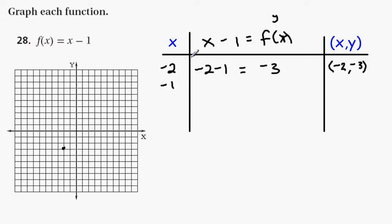Negative 1. Substitute negative 1 in for x. I have negative 1 minus 1. Combine those two, and I get negative 2. So, my ordered pair, then, is going to consist of negative 1, comma, minus 2. So, let's find that point. Negative 1, one unit to the left, two units down. Draw a point.